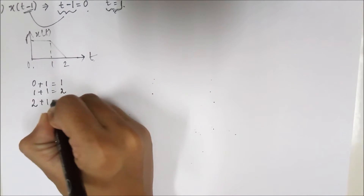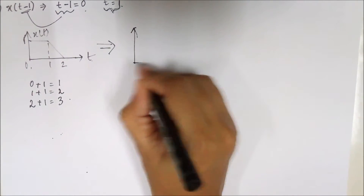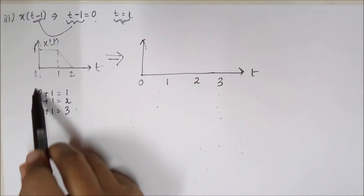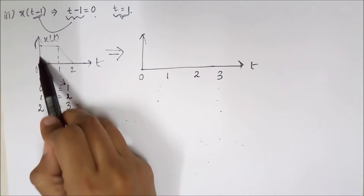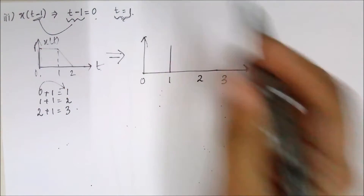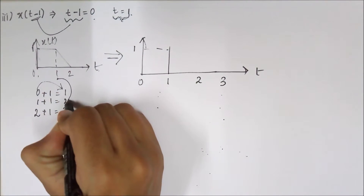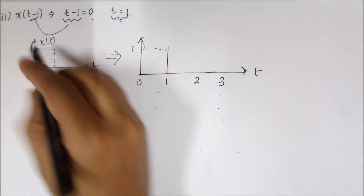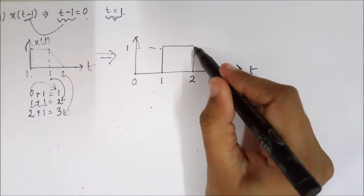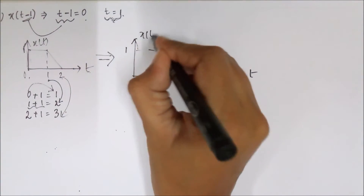The signal is shifted to the new values. Whatever signal we had at 0 now comes at 1 with the same amplitude. Whatever was at 1 is now shifted to 2, and whatever was at 2 is shifted to 3. This is how x(t-1) will look.